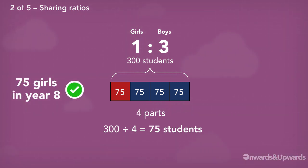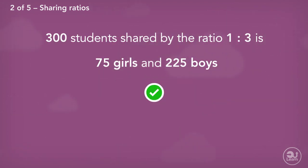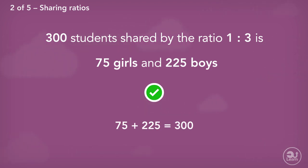For the boys, on the second side of our ratio, this is worth three parts. So we multiply our one part — which is 75 — by three, which gives us a total of 225 boys. Our final answer: 300 students shared by the ratio 1 to 3 is 75 girls and 225 boys. We can double check this by adding 75 and 225 together, which gives us 300 — the amount we started with.